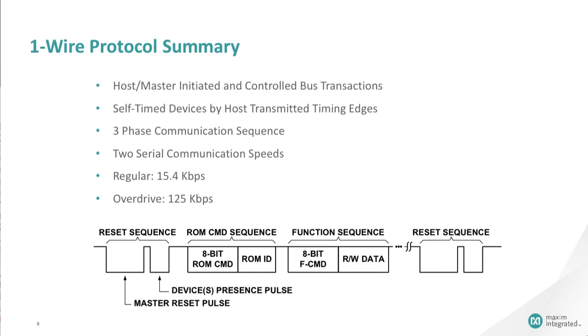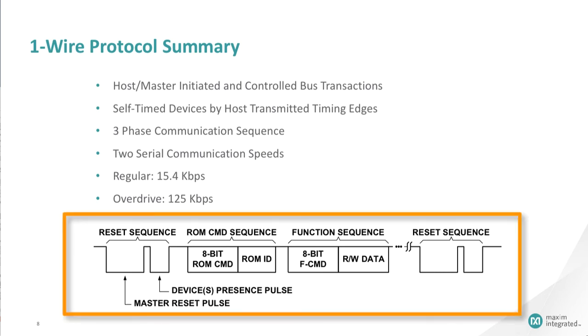To summarize, the one-wire protocol is an efficient signaling scheme that multiplexes data and power onto a single bus, thereby minimizing interface complexity. The protocol is multi-drop capable with a single-master, multiple-slave arrangement. A three-phase sequence is used for every transaction: Reset, device selection, and a device function command.